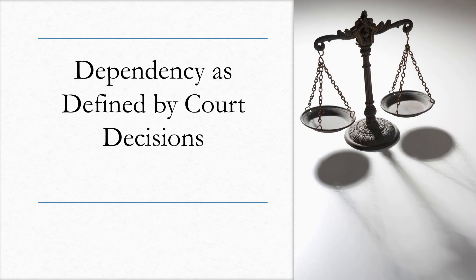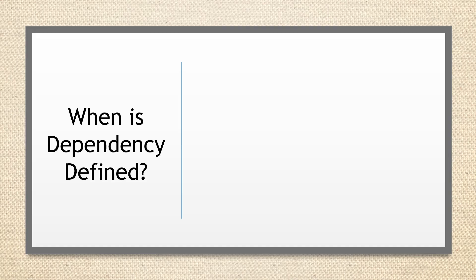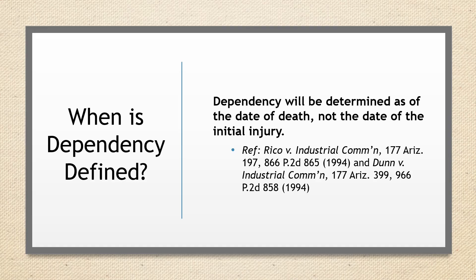Dependency as defined by Court Decisions: Dependency will be determined as of the date of death, not the date of initial injury. This is based upon a January 6, 1994, Arizona Supreme Court opinion regarding interpretation of ARS 23-1064-B.